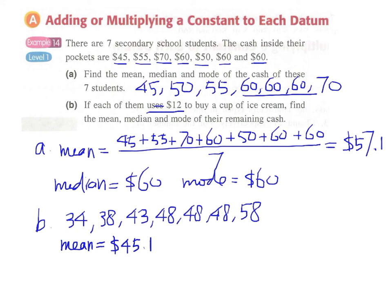But there is a second way. Since if you compare the new mean and the original mean, it differs or decreased by $12, which is exactly the amount of money which each student used to buy a cup of ice cream.